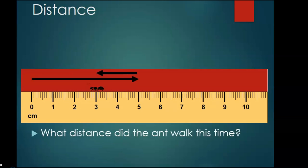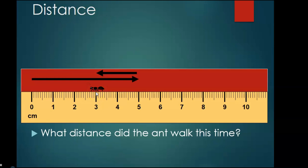What distance did the ant walk this time? Let's count: one, two, three, four, five, six, seven — seven centimeters. Let's see if our answer is correct. Correct, the distance of the ant is seven centimeters.